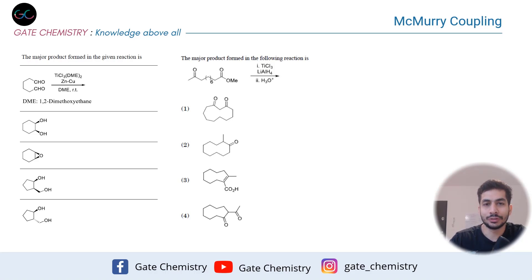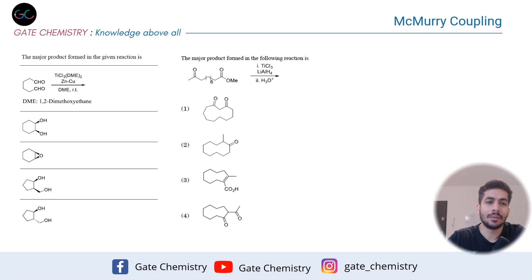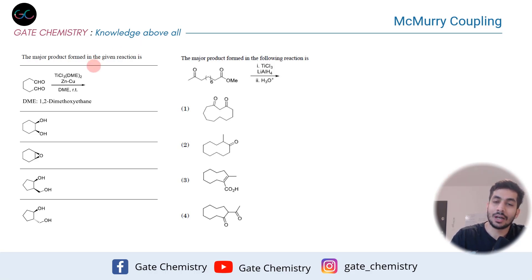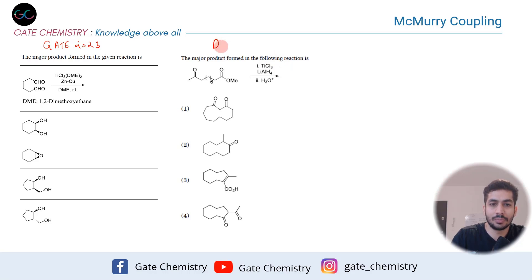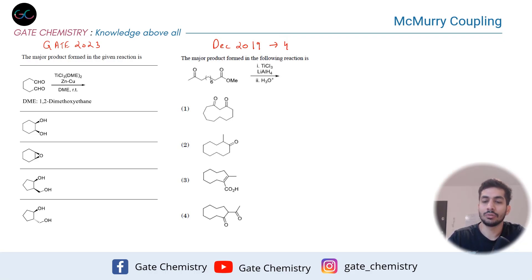Welcome to another video. Today we are going to discuss a very basic reaction: the McMurry coupling. It's not very complicated, but there are some ambiguities related to the mechanism. We'll discuss that quickly, and then we'll do two questions which were asked in competitive exams — one in GATE 2023 for one mark, and one in the December 2019 CSIR NET exam for four marks.